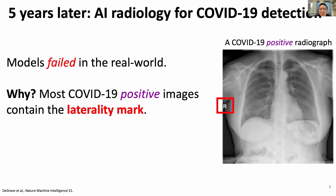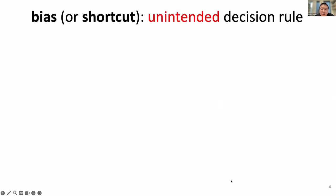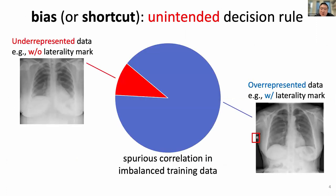It turns out that in the training data, most positive images contain the laterality mark, whereas the negative images do not. As a result, the model uses it as a shortcut to make positive predictions. Bias, or the shortcut problem, is the unintended decision rule that models learn from imbalanced training data. The model exploits those spurious correlations between the shortcut and the ground truth label. As a result, models are biased towards overrepresented data with shortcuts and fail to generalize to underrepresented data where the shortcut cue is absent.